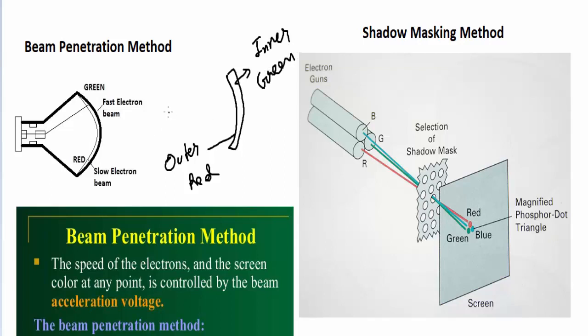Basically, what happens is the electron beam, if it's coming at a slow or less intensity, it would hit the red plate and we could see the red color being generated. If we further increase the speed and acceleration, it would hit the green also, and as a result we could see green. On variation of intensity of the electron beam, we could generate other colors.